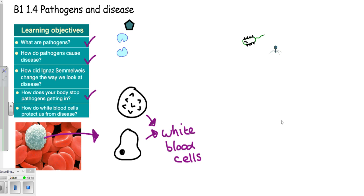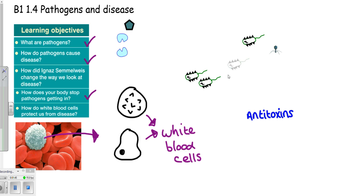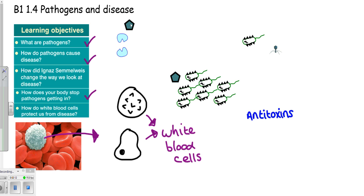Let's take a look at the first method that these cells use to protect us from pathogens, and that is antitoxins. An antitoxin is the opposite to a toxin. When an E. coli cell enters our body, it reproduces very quickly, and all of these E. coli cells can produce toxins, and the toxins are what cause damage to our body and cause disease. The white blood cell protects us from these toxins by producing what are known as antitoxins. As the white blood cell detects pathogens, it will start producing these antitoxins, and these antitoxins won't destroy the pathogen, but they will be amongst them.